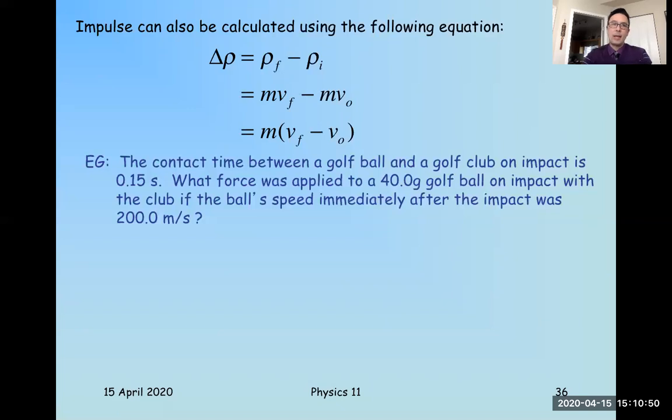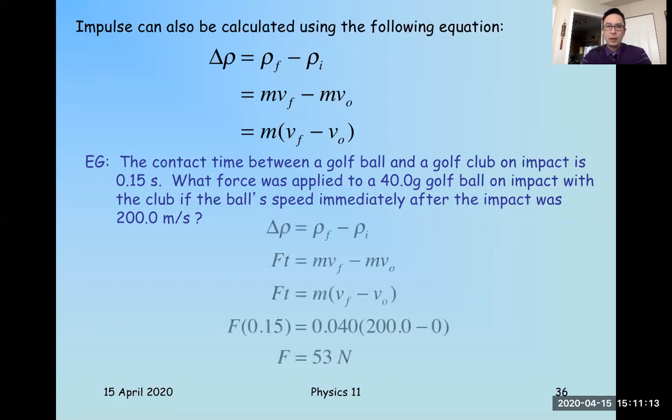So here's an example question. Contact time between a golf ball and a golf club on impact is 0.15 seconds. What force is applied to a 40 gram golf ball on impact if the ball's speed immediately after the impact is 200 meters per second. So before impact, it's 0, after it's 200 meters per second. So then you're going to see in our solution here, I'm going to use the equation change of momentum is momentum final minus initial. The reason I selected that is because I have information in the question regarding my initial and final velocities. Initial was 0, final was 200. I also know the mass of the ball that is gaining that velocity. It's 40 grams or 0.04 kilograms. And lastly, I know the contact time.